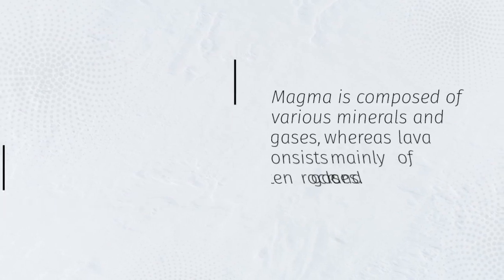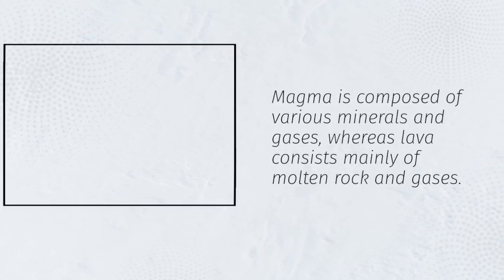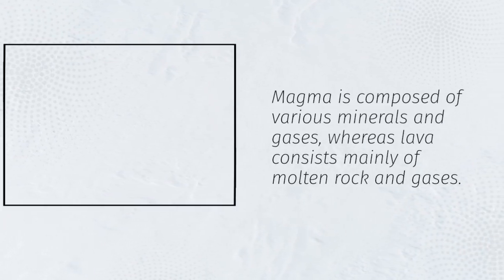Magma is composed of various minerals and gases, whereas lava consists mainly of molten rock and gases.